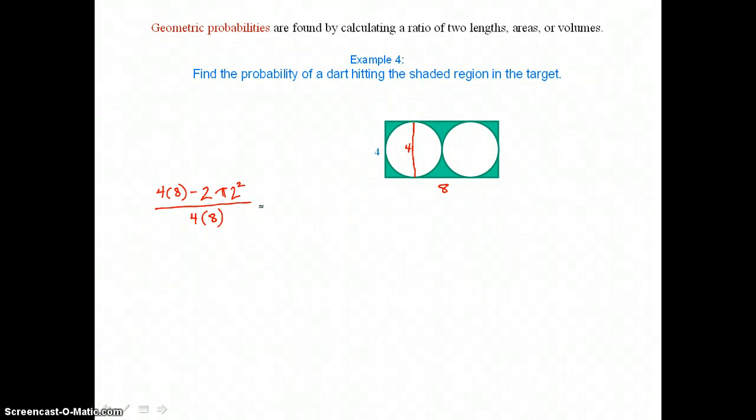So we need to simplify here. So 4 times 8 is 32 minus 2 squared is 4 and 4 times 2 is 8, so we're subtracting 8 pi from 32, and in the denominator we have a value of 32.